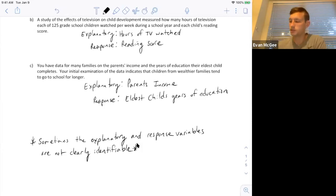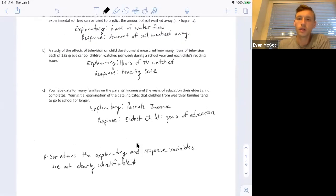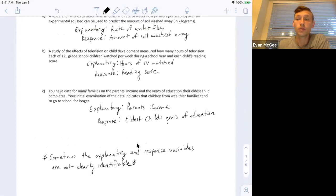So for these three examples, it was clear which one they've identified, which one they want or they think should be the explanatory or the response. But I want to make sure we mention that sometimes it's not clearly identified which one is which. Sometimes they're just looking to see if there's a relationship between two variables and they don't specify which one is influencing the other, which one is responding. So sometimes we can't actually say which one is going to be the explanatory response.